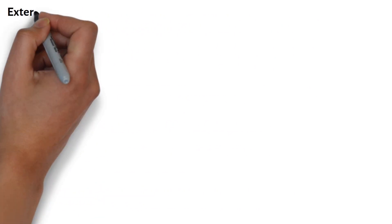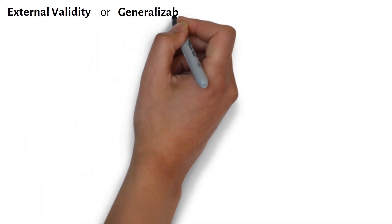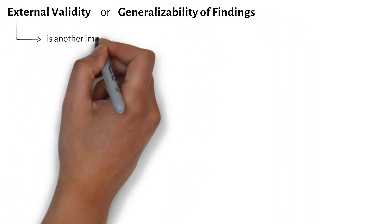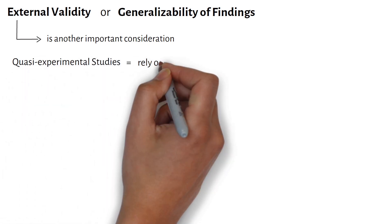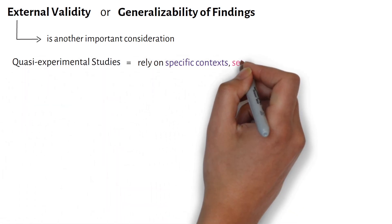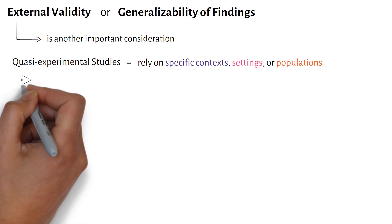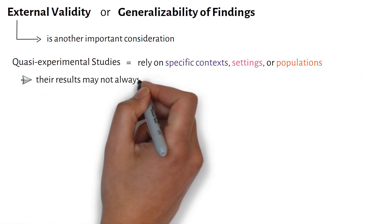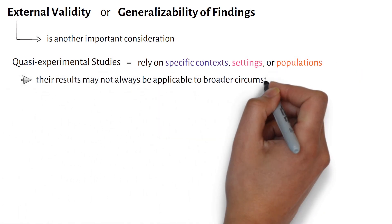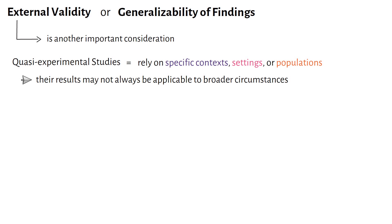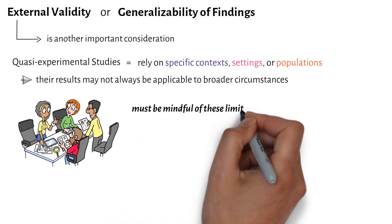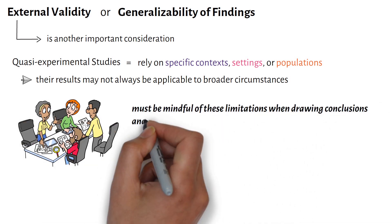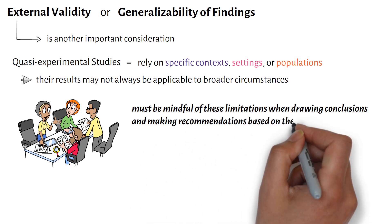External validity, or the generalizability of findings, is another important consideration. Because quasi-experimental studies often rely on specific contexts, settings, or populations, their results may not always be applicable to broader circumstances. Researchers must be mindful of these limitations when drawing conclusions and making recommendations based on their findings.